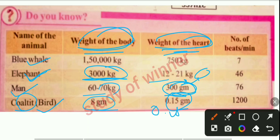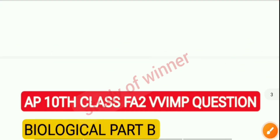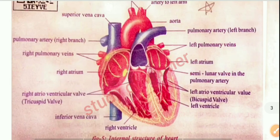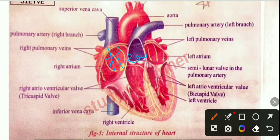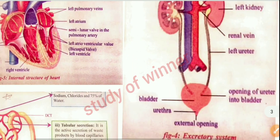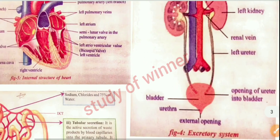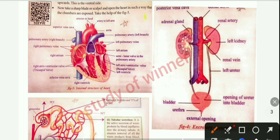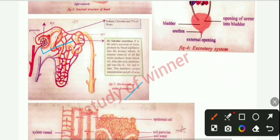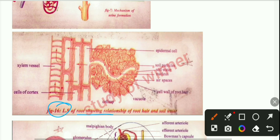Next you can see your diagrams. This is your first diagram of the heart — this heart diagram is very very important, so practice it. Next you can see your external opening diagram — also practice this diagram, it is very very important. Next you can see the LS of roots diagram showing the relationship of root hair and soil water — complete this diagram.